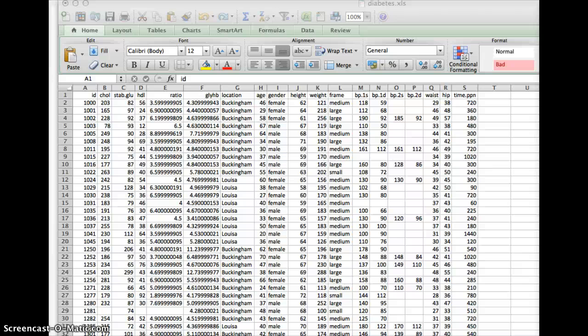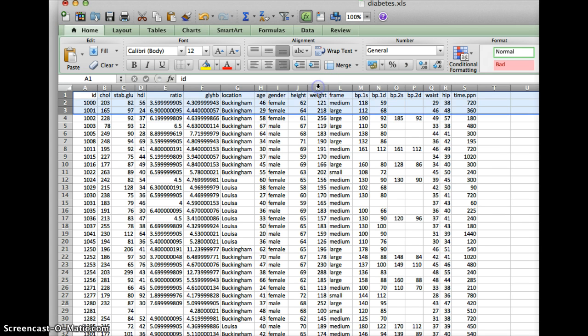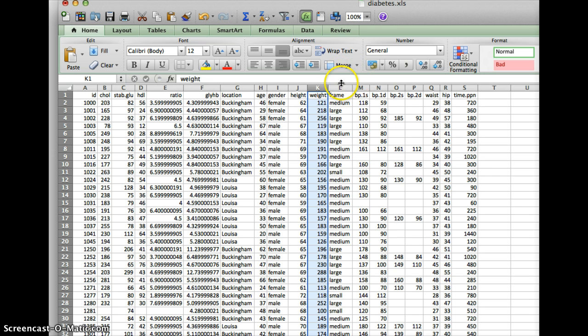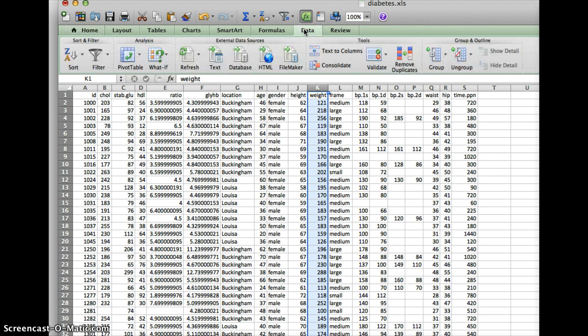I'm going to click on K, and then I'm going to sort the data. Column K is what I'm interested in. Bring your cursor up to K, click on it, and make sure the entire column is clicked. Then we're going to sort the data. Click on the data button up top, and we're going to go to sort.